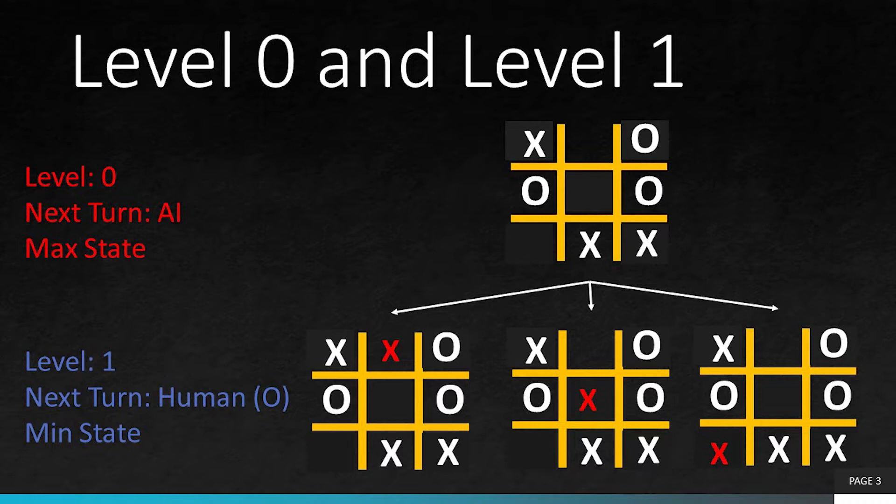In this case, AI is X. AI player can play at three possible choices as shown in the scenario in level 1. We notice that we already have two terminal states here and this is also in the favor of AI.